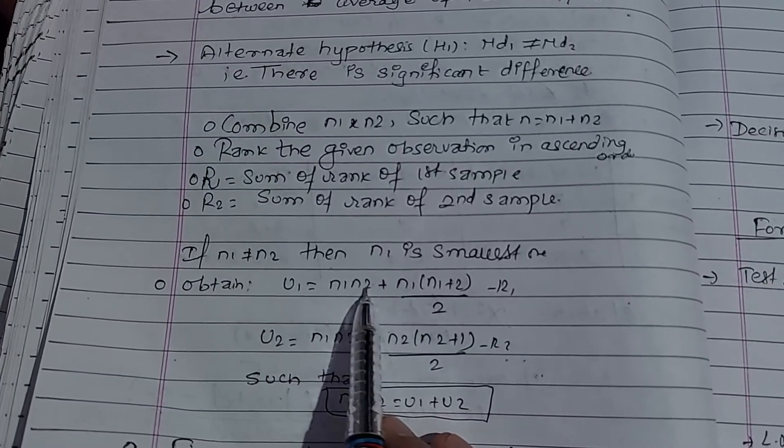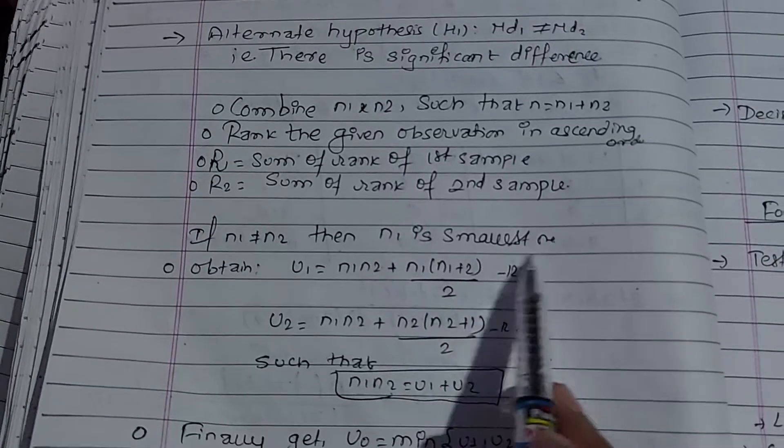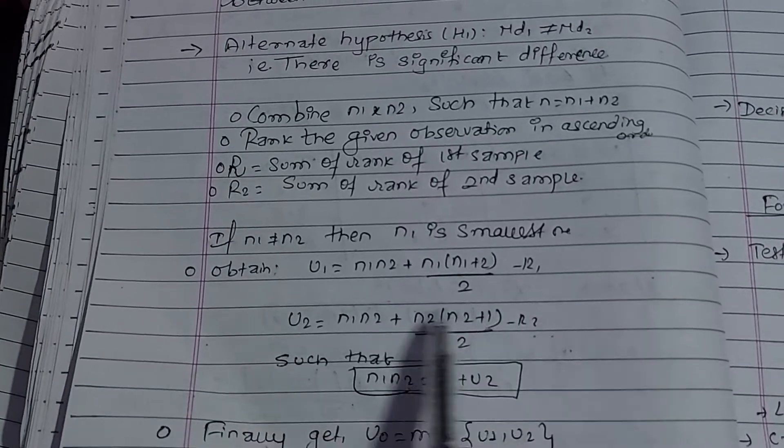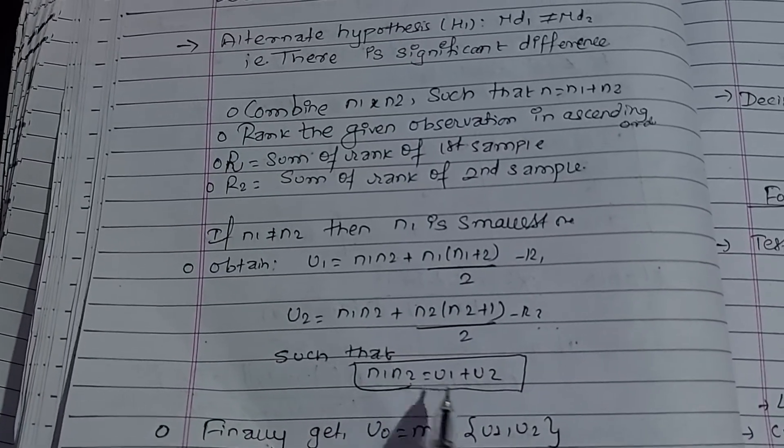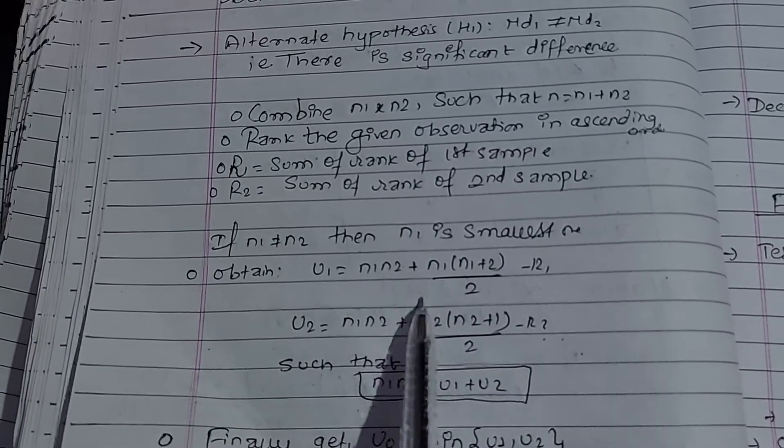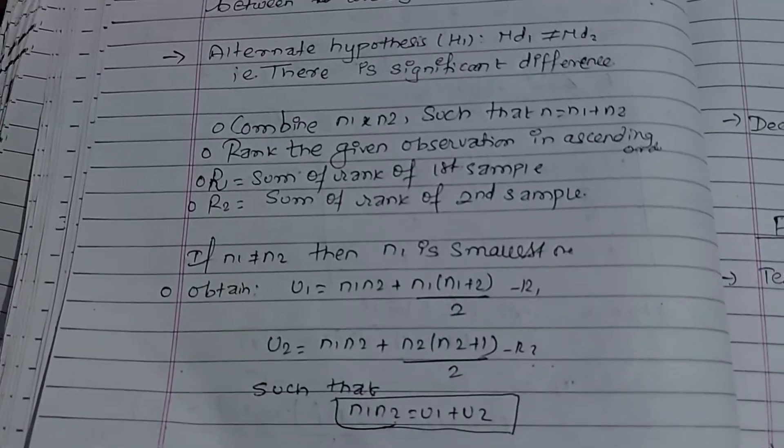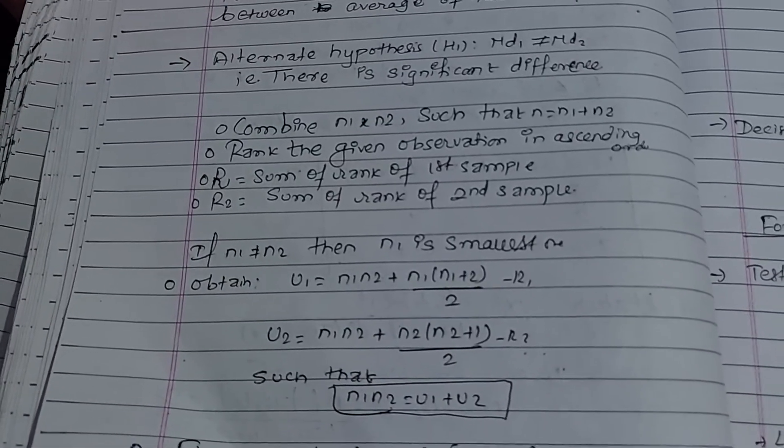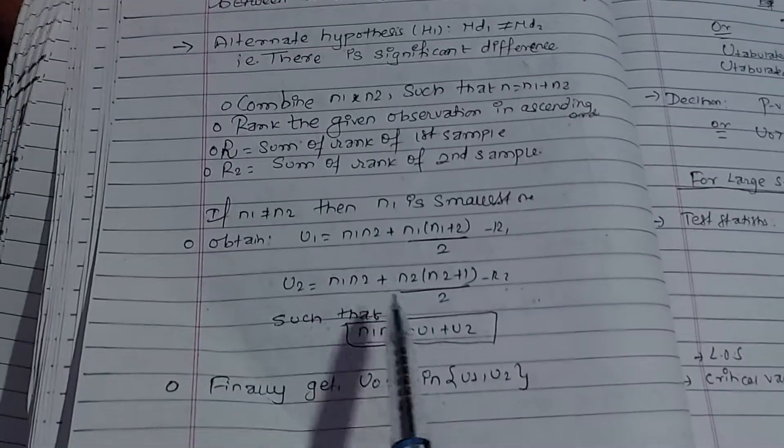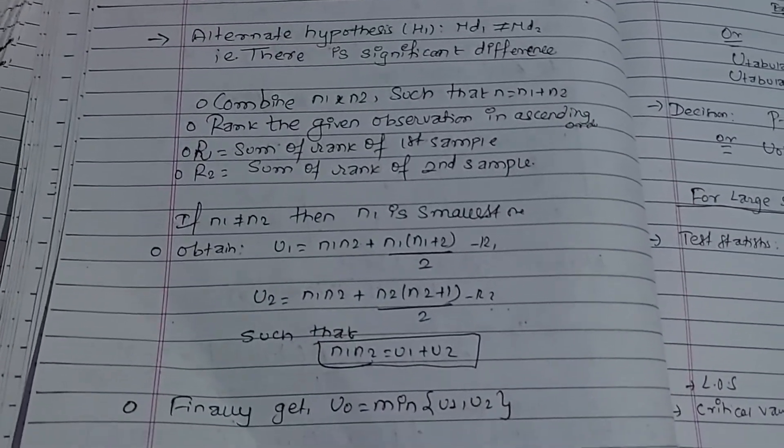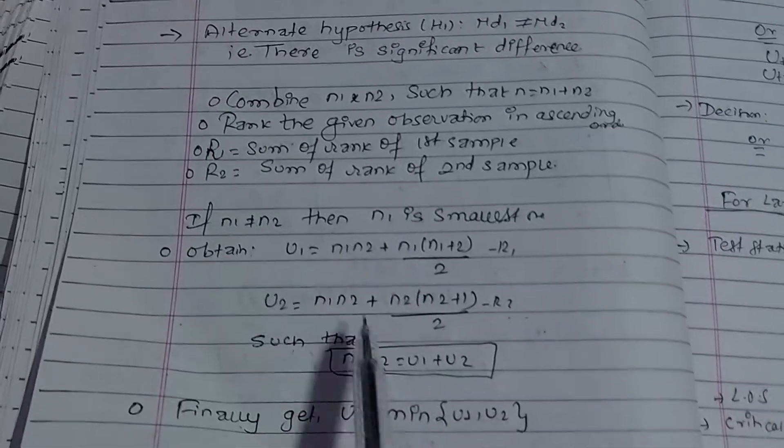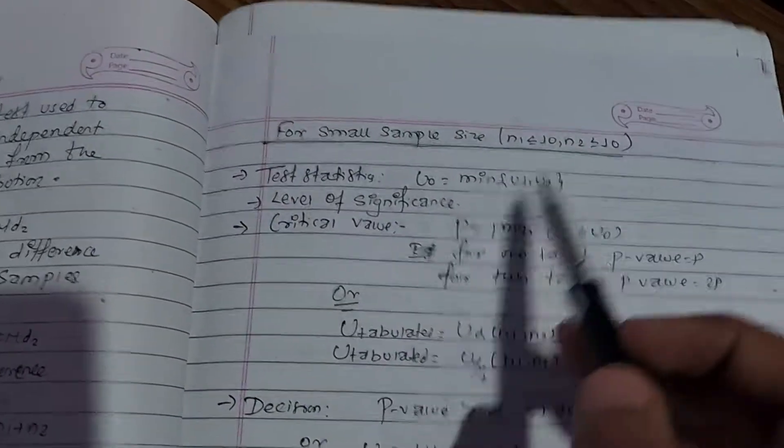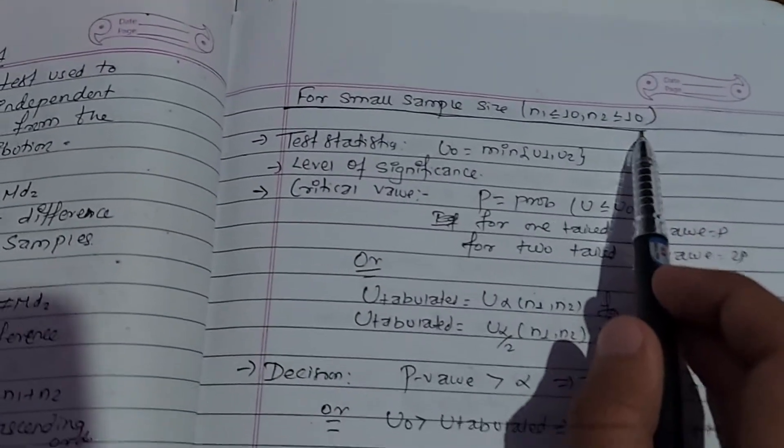Next, calculate R1 and R2, which are the sum of ranks for sample 1 and sample 2 respectively. Then compute U1 and U2 using the formulas. The test statistic U equals the minimum of U1 and U2, where the smaller sample size is used.